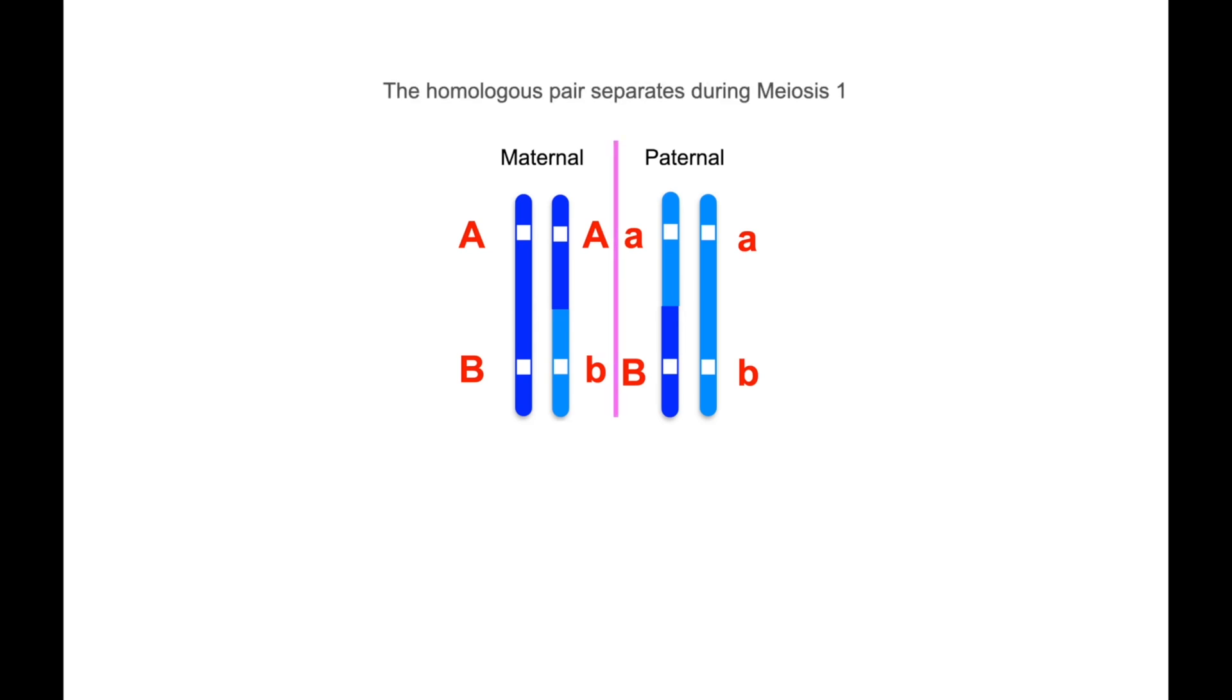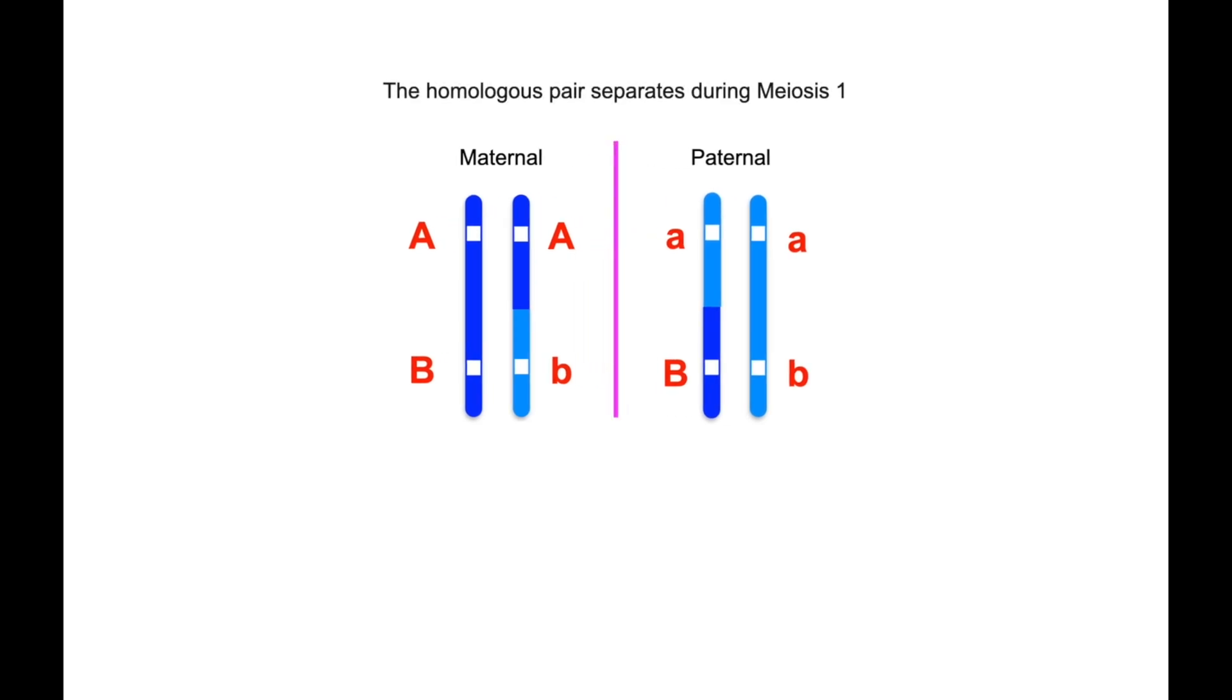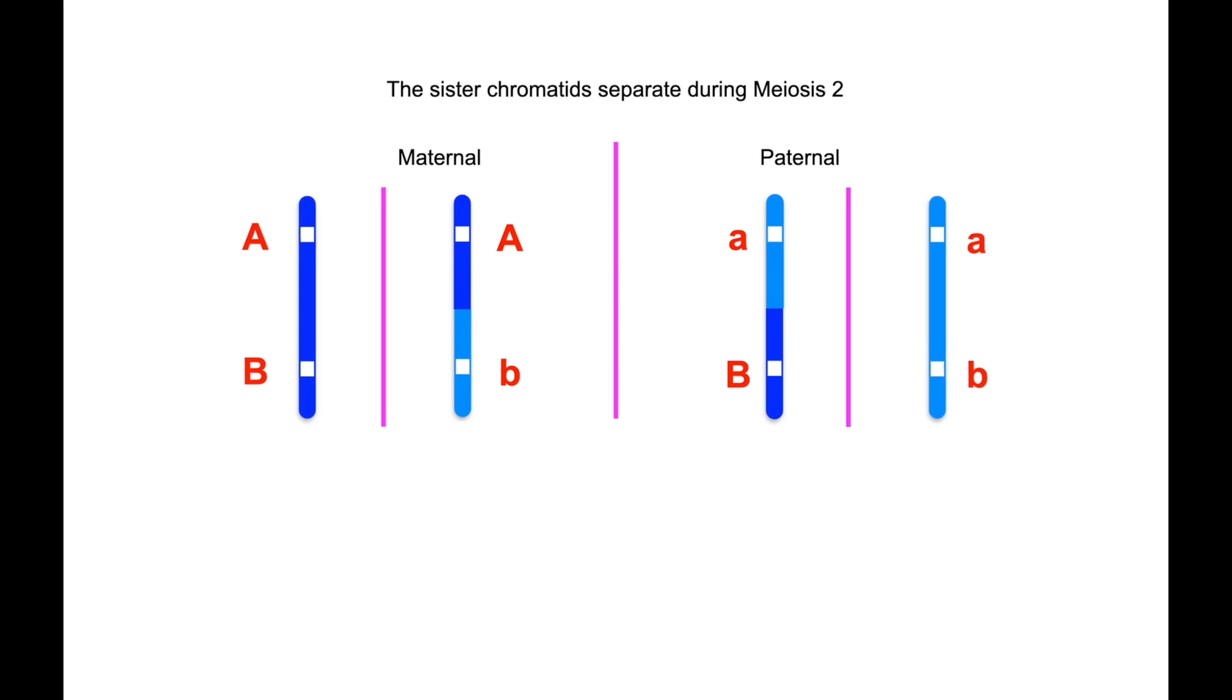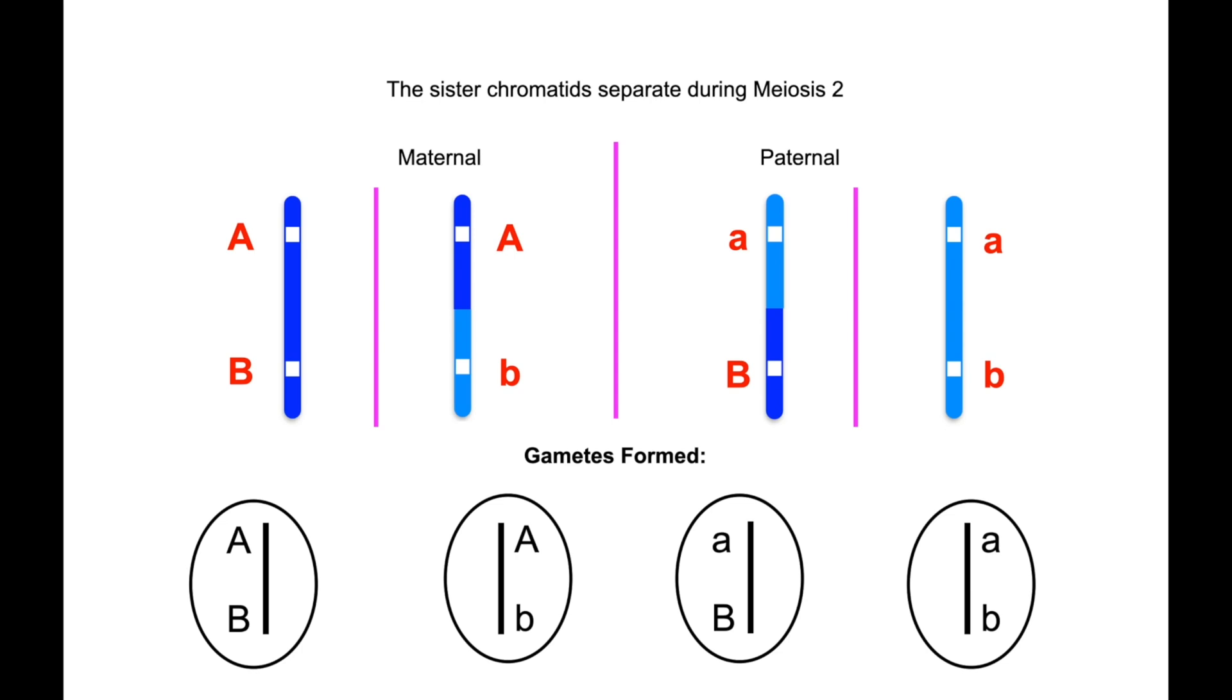The rest of meiosis goes exactly as planned, as before. So the homologous pair separates during meiosis 1, and then again, the sister chromatids separate during meiosis 2. But the outcome this time, in terms of gametes, is slightly different.